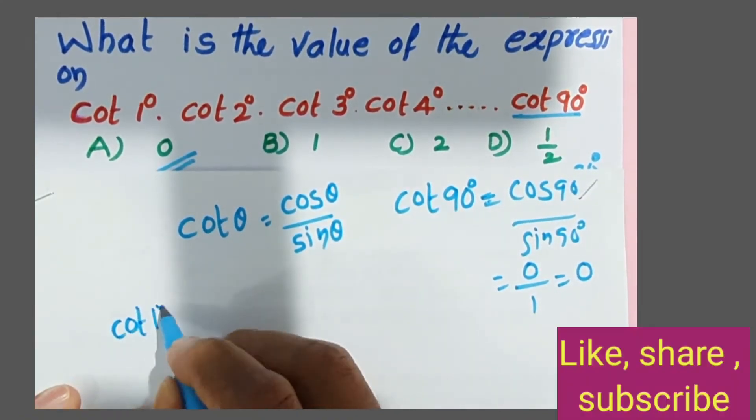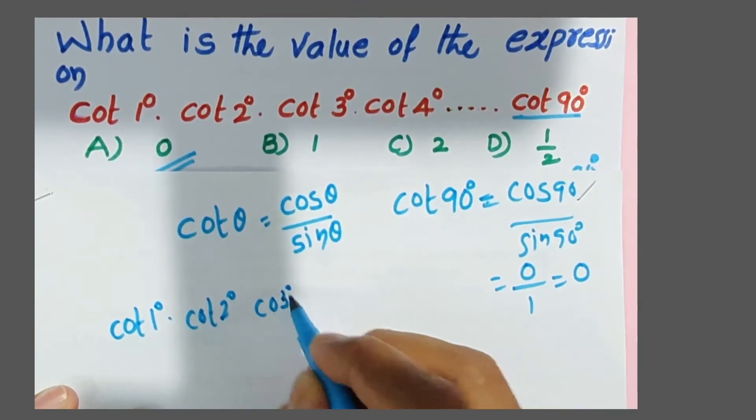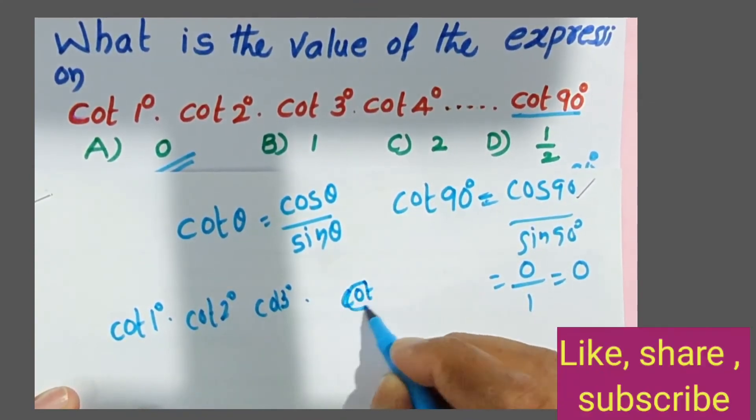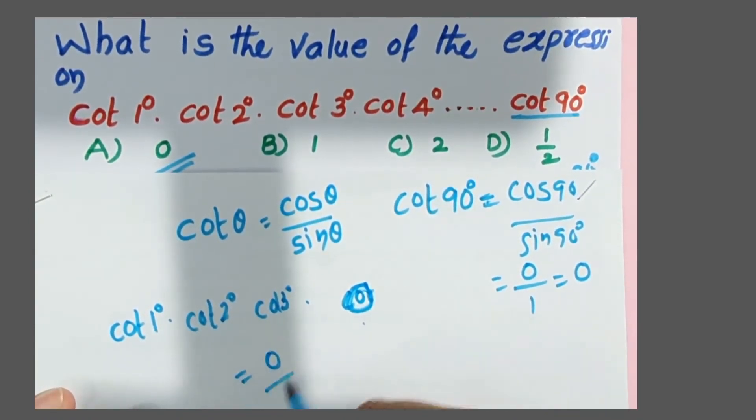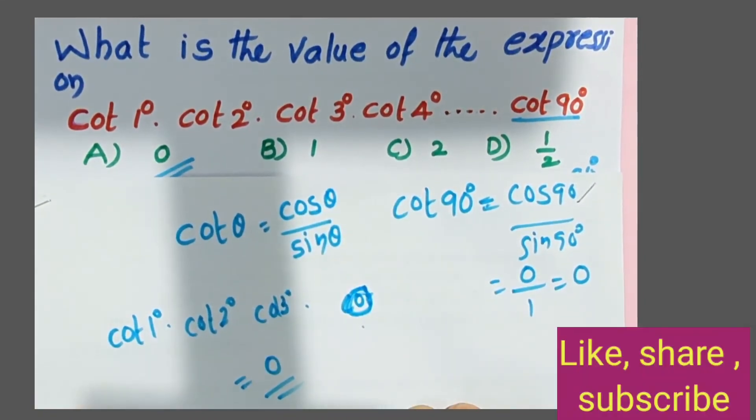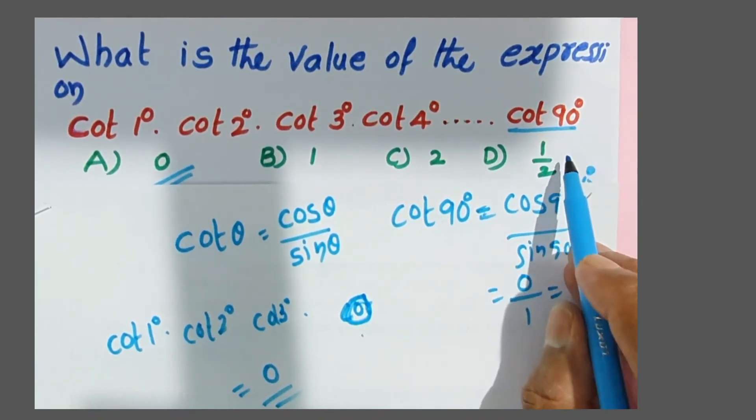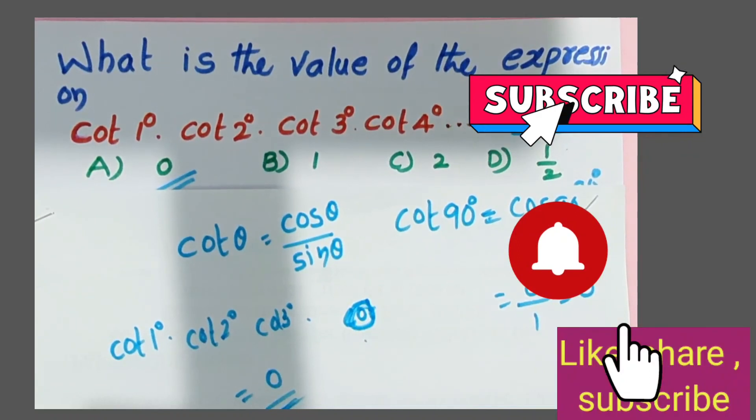In the product cot 1° · cot 2° · cot 3° and so on to cot 90°, since cot 90° equals 0, and 0 multiplied by any number equals 0, the answer is option A, which is 0.